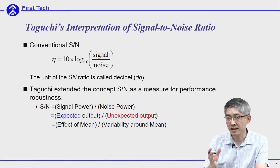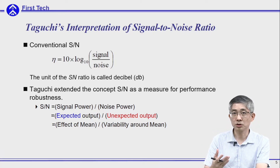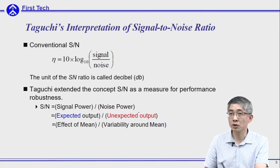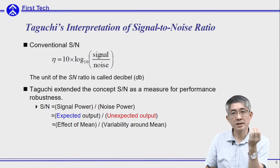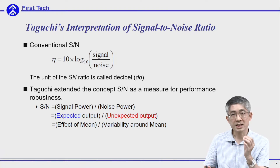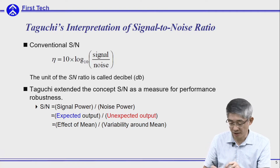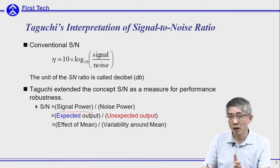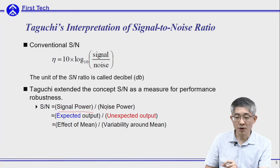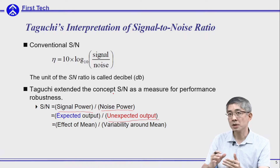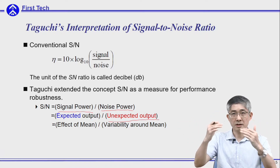Taguchi wanted to extend this concept of the SN ratio into his definition of a quality measure. SN ratio is the signal power over noise power. In an engineering system, what is the signal? Taguchi borrowed the concept from communication systems — the expected output of an engineering system is similar to the signal power, and the unwanted, unexpected output is the noise power. This unexpected output can be estimated by the variability around the mean.